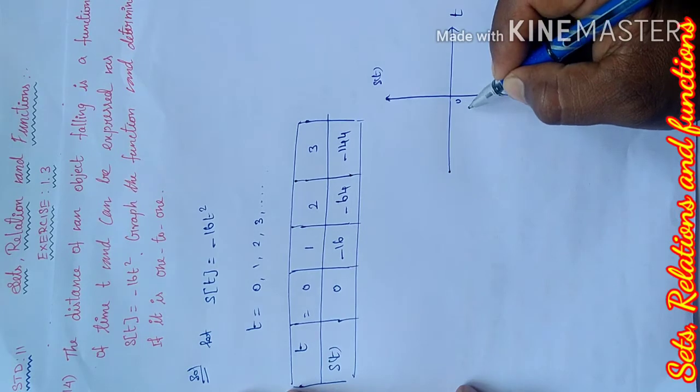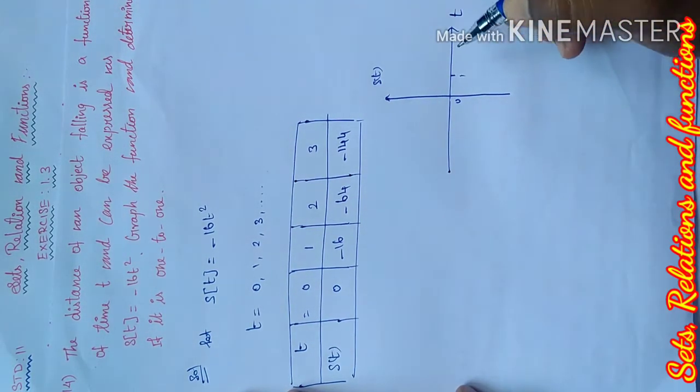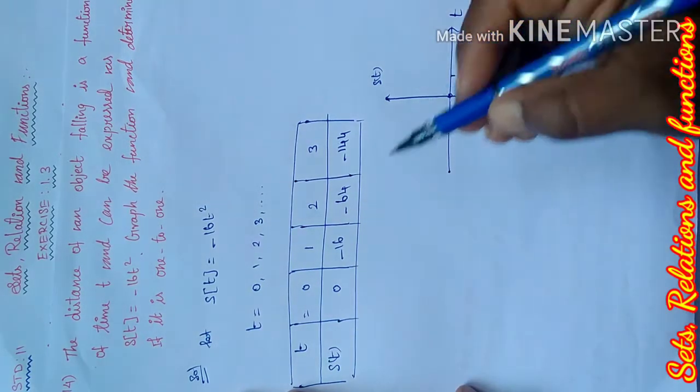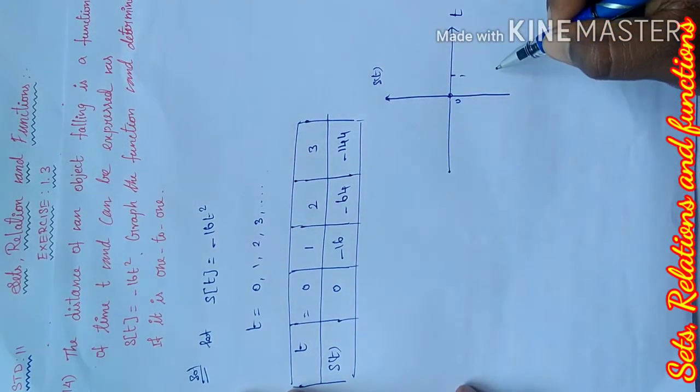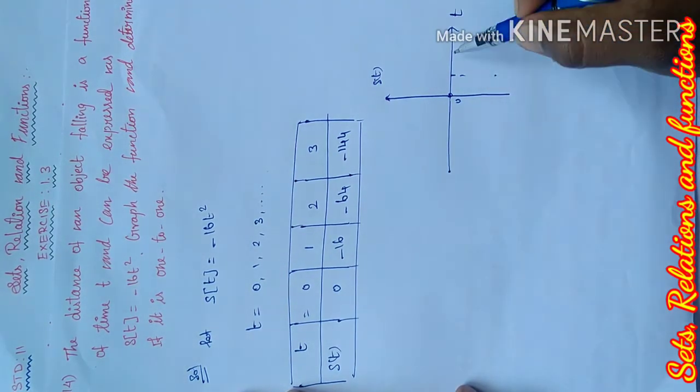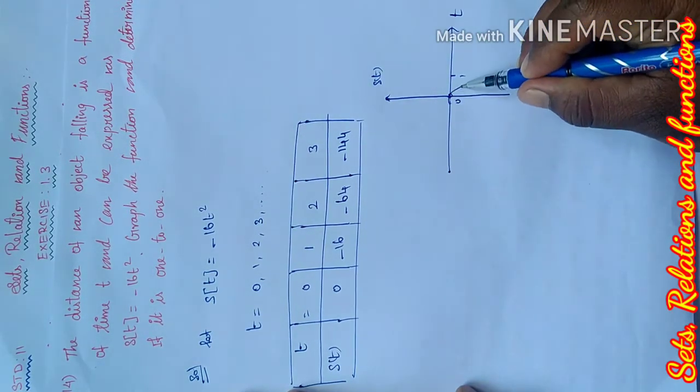Now we apply the points. First value equals 0, 0. Then the second point is 1, minus 16. Third point 2, minus 64. Fourth point 3, minus 144. This is the graph.